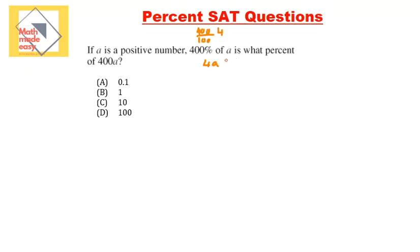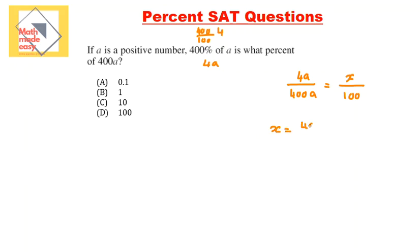For example, 200% of X means 2X. Once you see 400% of a number, it means 4 times that number. So the question becomes: 4A is what percent of 400A? Here 4A is the part and 400A is the whole — it's after 'of.' Cross multiplying gives X equal to 4A times 100 over 400A, which simplifies to 1. So the answer is 1%, which is choice B.